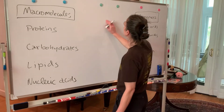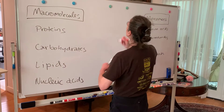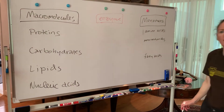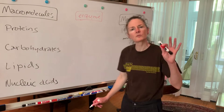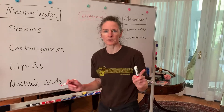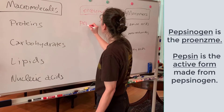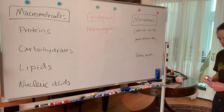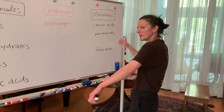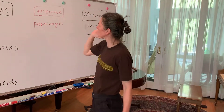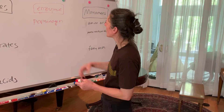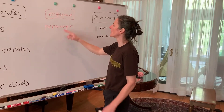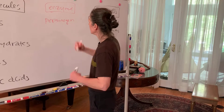We use enzymes to do this breakdown. The enzymes we use for proteins are proteases. One specific one we discussed is pepsin. Pepsin is a pro-enzyme — pepsinogen — produced by the stomach so the stomach doesn't digest itself. Pepsinogen is the inactive form, and we have to cleave part of the polypeptide off — because all enzymes are proteins — to get the active form, pepsin.